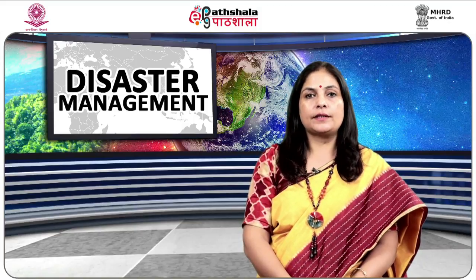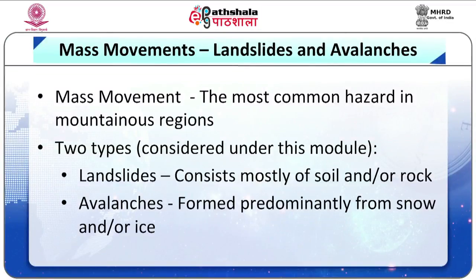Let us first understand the concept of disaster management. In many mountainous environments, the most common hazard is mass movement — the displacement of surface material downslope under the force of gravity, occurring in almost any environment where slopes are present. Both landslides and avalanches are types of mass movements. Landslides consist mostly of rock and soil, and snow avalanches are formed predominantly from snow or ice.